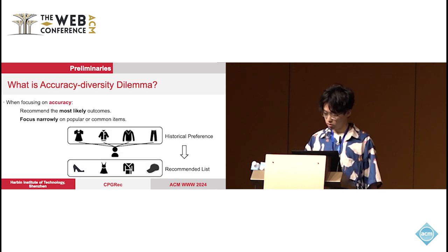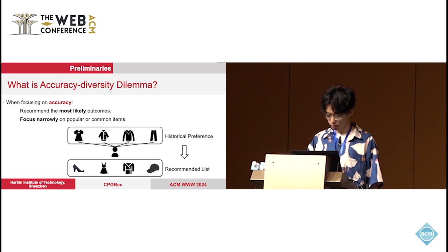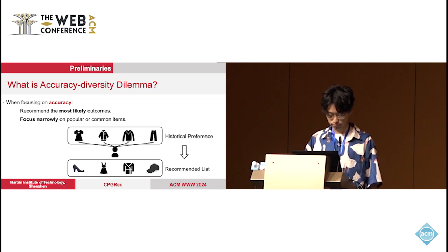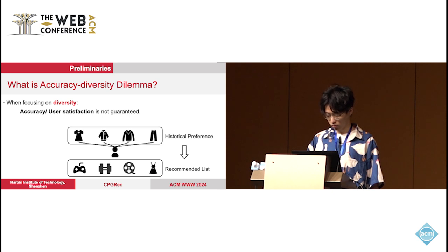For game recommendation, the problem we aim to solve is that when considering diversity, it's not easy to get rid of the so-called accuracy-diversity dilemma. That is, higher accuracy often means losing diversity to some extent. The possible reason is that when we recommend the most likely outcomes to users based on their historical preferences, we may focus narrowly on popular or common items and ignore items that are more diverse. On the other hand, after introducing some diversification strategies, diversity indeed gets promoted, while accuracy is often not guaranteed.